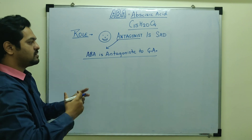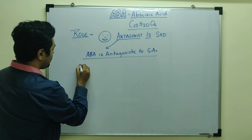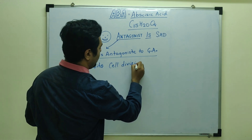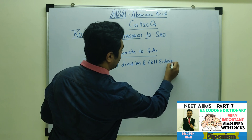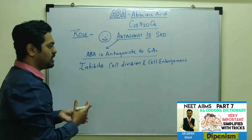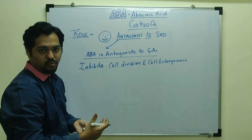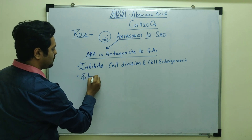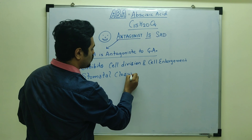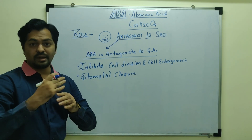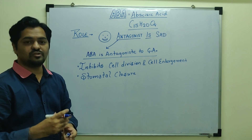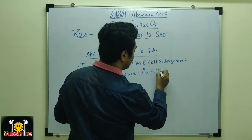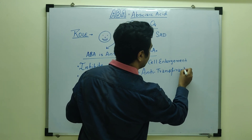Abscisic acid inhibits cell division and cell enlargement or cell elongation — activities that gibberellins and auxins promote. Abscisic acid also causes stomatal closure. When stomata close, transpiration is reduced or completely prevented. This is released under stressful conditions, causing stomatal closure, so abscisic acid is known as an anti-transpirant.